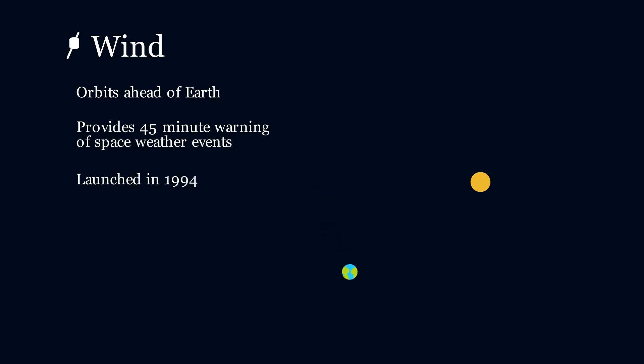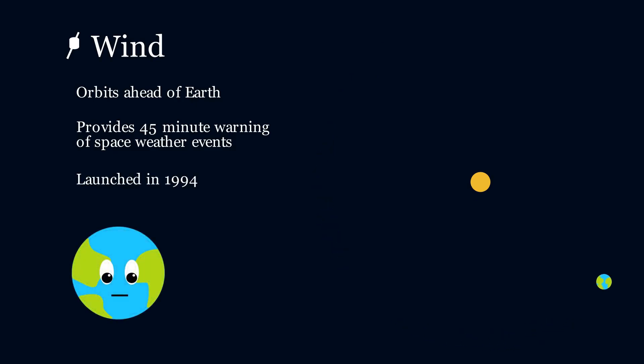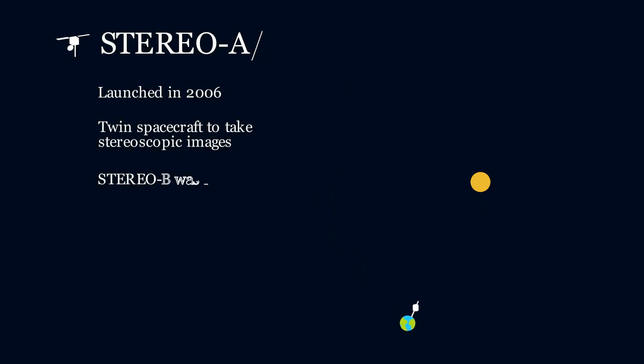WIND is very old, and much like the TV show launched in the same year, it needed some friends. So NASA launched twin spacecraft to provide stereoscopic images of the sun, although sadly we lost connection to Stereo B in 2014.